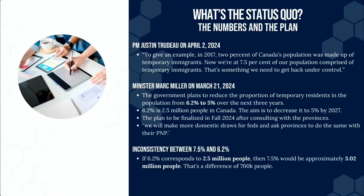Justin Trudeau mentioned on April 2nd that in 2017, 2% of Canada's population was made up of temporary immigrants; now it's at 7.5%. Mark Miller and IRCC cite 6.2% — there's inconsistency between these numbers. The intention is to decrease it from approximately 6.2% of temporary residents to 5% over the next seven years.